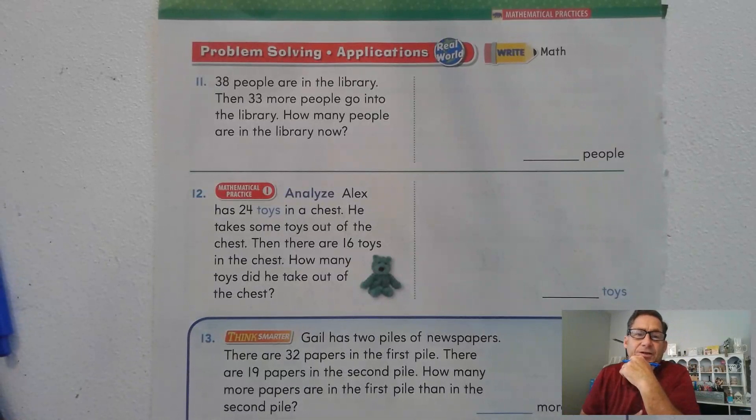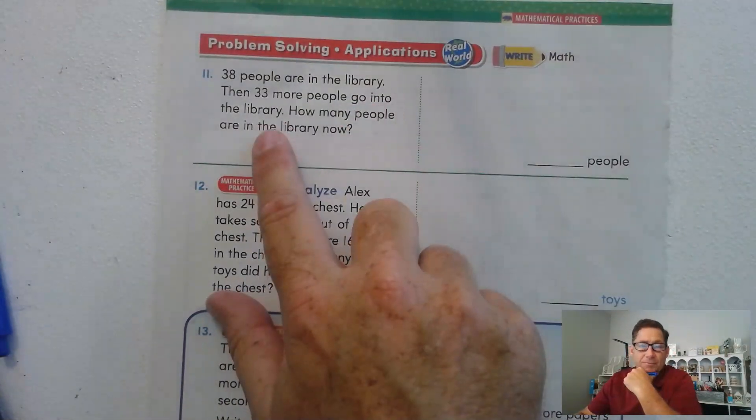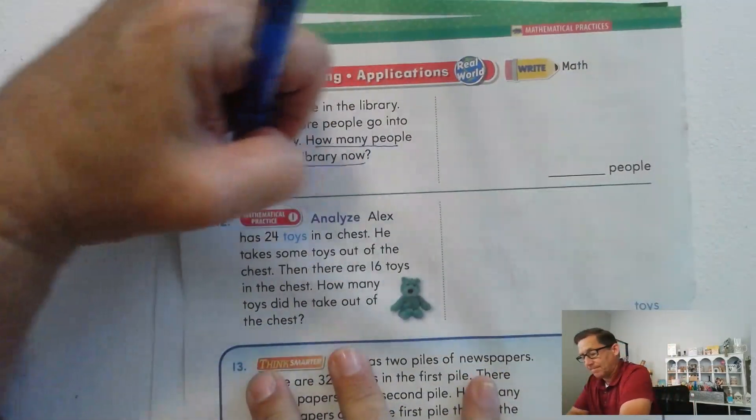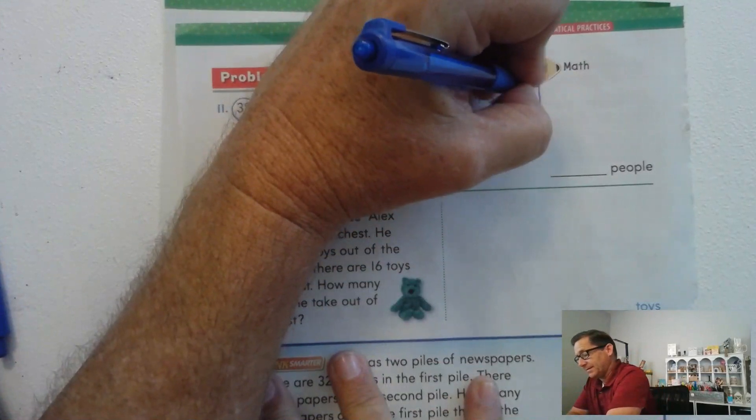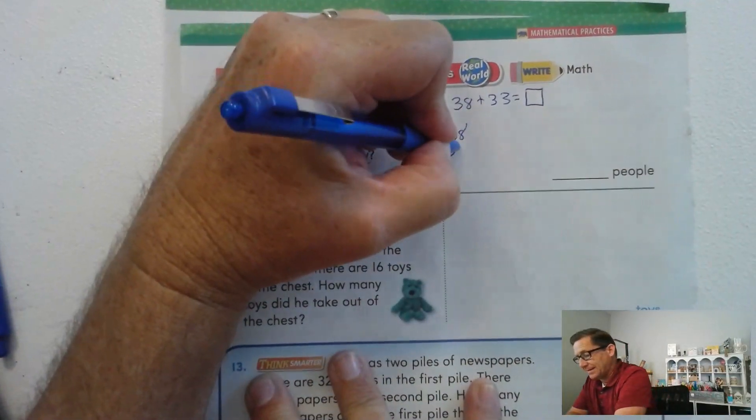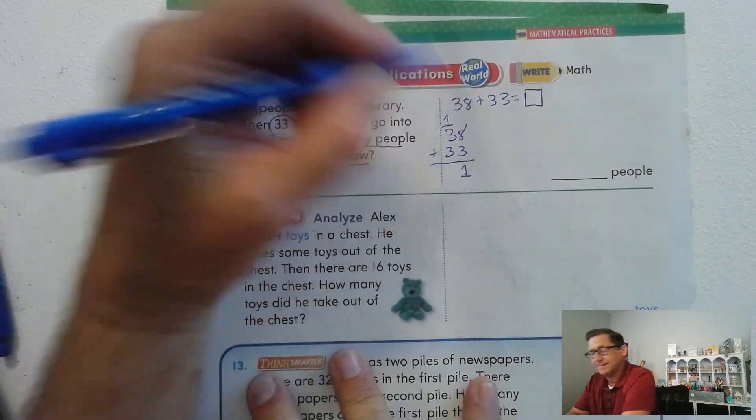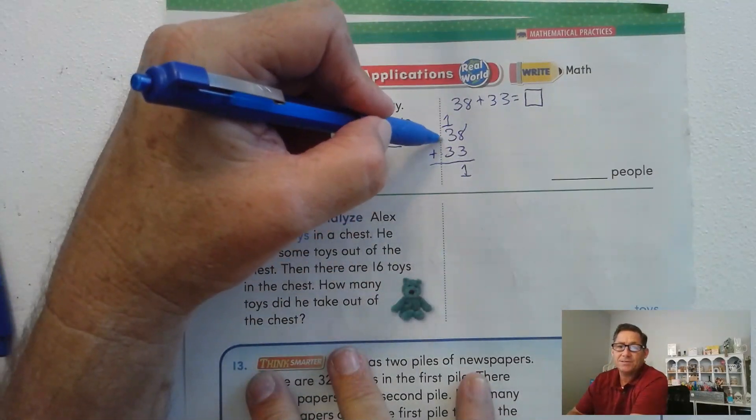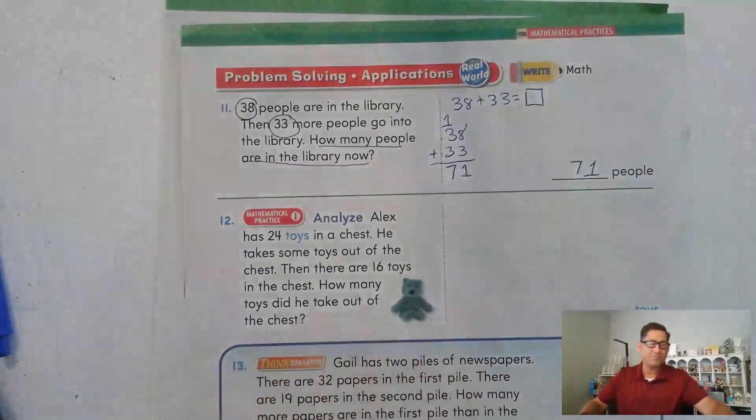Page 236, number 11. 38 people are in the library and 33 more people go into the library. How many people are in the library now? So did those 33 people leave? Or do we add those to the people in the library? It says more people go into the library. So this isn't a subtraction problem. This is addition. So we start with 38 and we have to add 33. 8 plus 3 is 11 ones. I'm going to regroup that as 1 ten and 1 one. 3 tens plus 3 tens is 6 tens. Plus the regrouped 10 is 7 tens. 71 people are in the library.